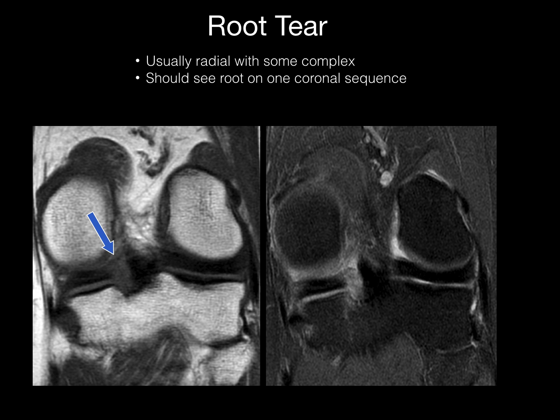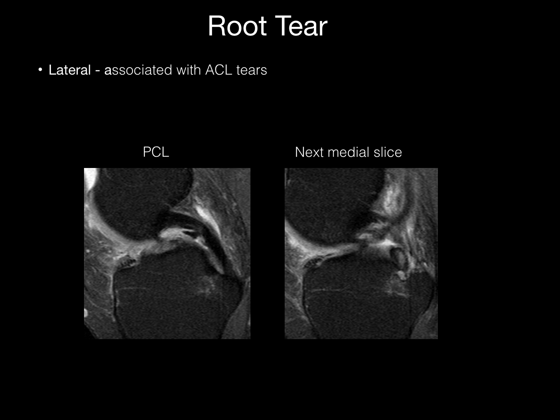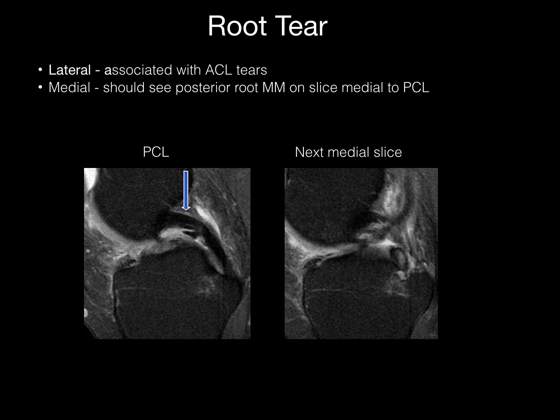Root tears are usually radial; some can be complex. Normally you should see the posterior root on at least one coronal sequence. Lateral posterior root tears are associated with ACL tears. On the medial side, you should see the posterior root of the medial meniscus on a slice medial to the posterior cruciate ligament. The next slice over, you should see normal meniscus — if you see abnormal signal and the ACL is torn, look for a lateral root tear.